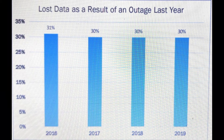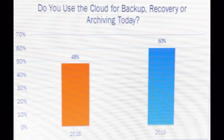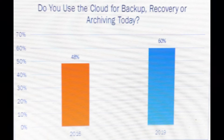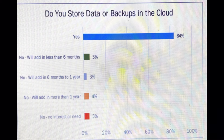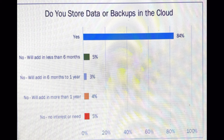In Figure 1, 30% of responding organizations reported losing data as the result of an outage. The use of the cloud to avoid data loss has greatly increased over the last four years. 60% of respondents reported usage of cloud, and the growth in usage is 12% from 2016 to 2019, as seen in Figure 2. Overall, 84% of organizations reported using the cloud to store data or backups. Fewer than 10% of responders don't use the cloud for file and data storage or have no plans to add it this year, as shown in Figure 3.